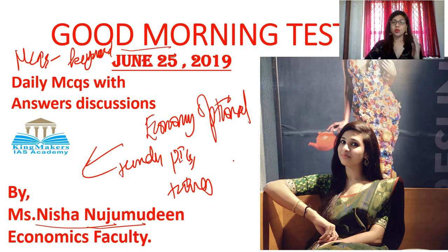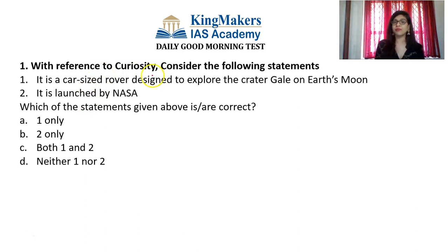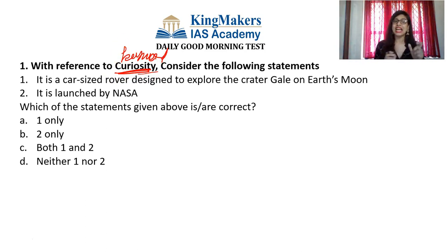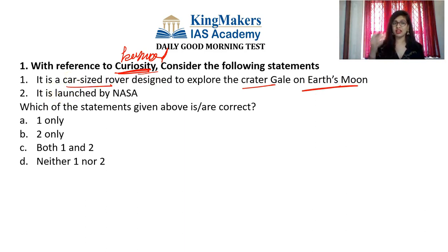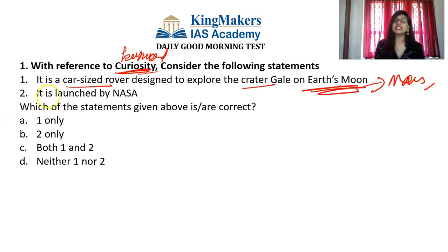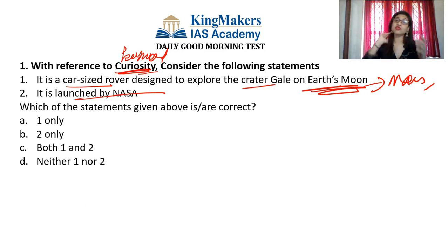The first question of today's session, based on June 25, 2019 current affairs, is: with reference to Curiosity, consider the following statements. The keyword here is 'Curiosity.' Statement one: it is a car-sized rover designed to explore the crater Gale on Earth's Moon. Statement two: it is launched by NASA. We know it's a car-sized rover — so more or less, the second option could be right. But the key question is whether it explores Earth's Moon or Mars.